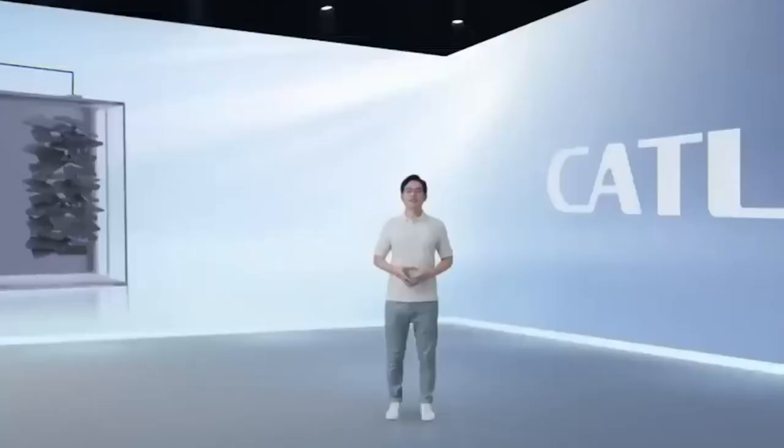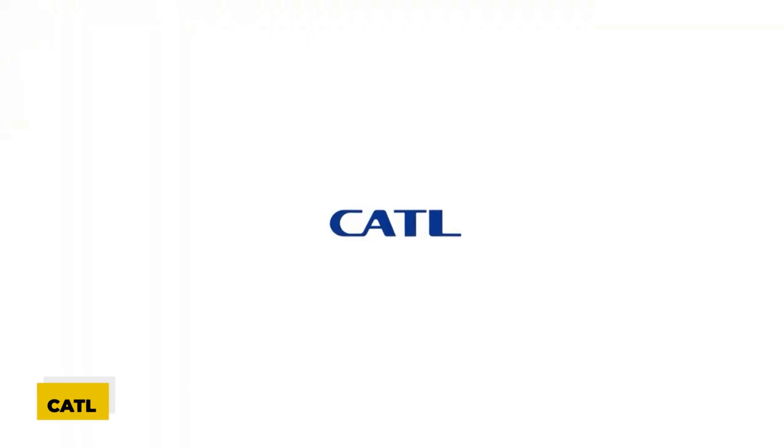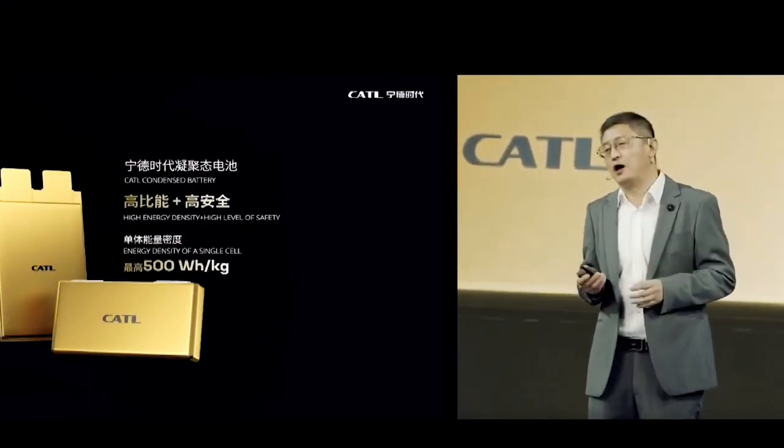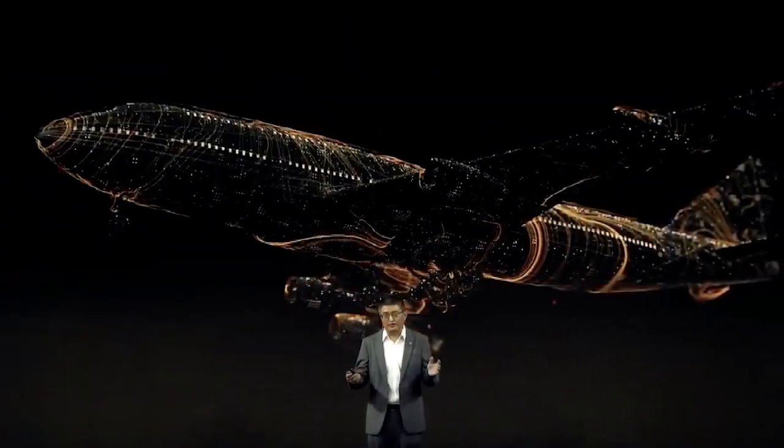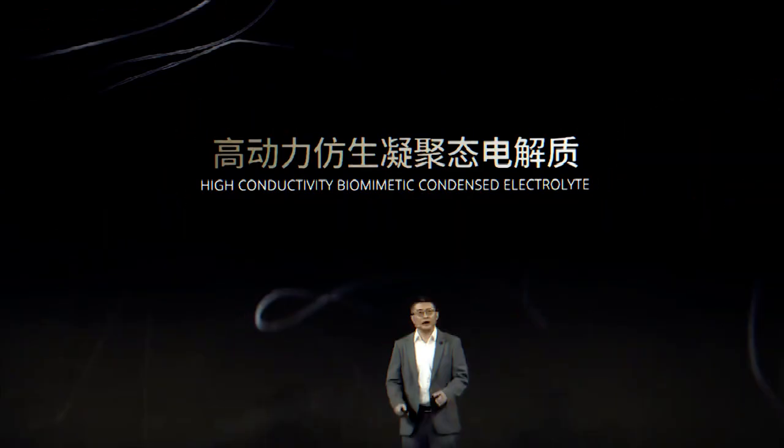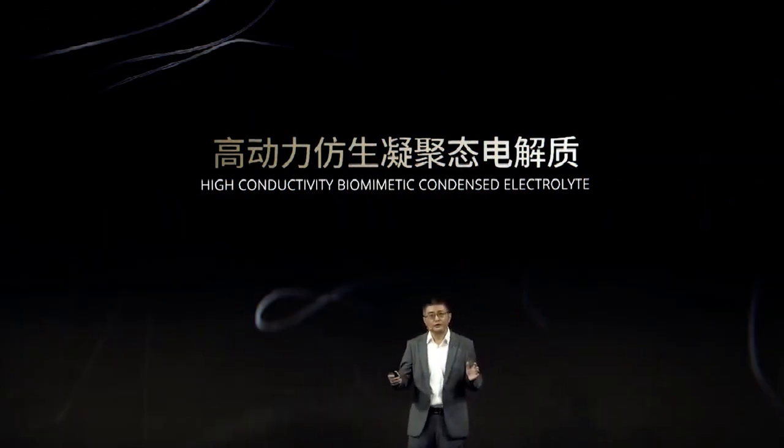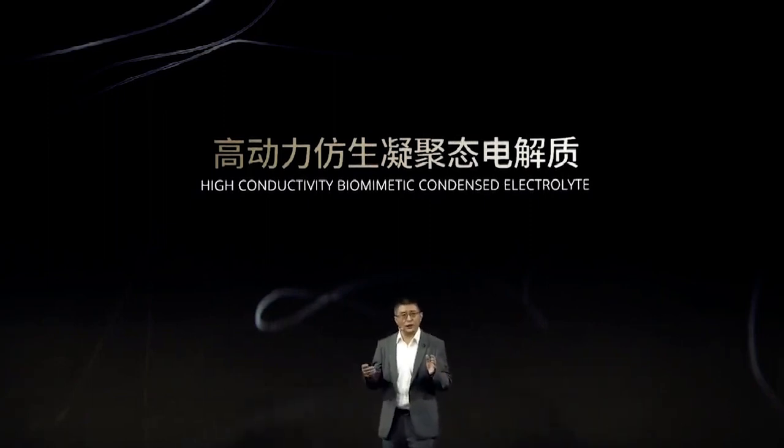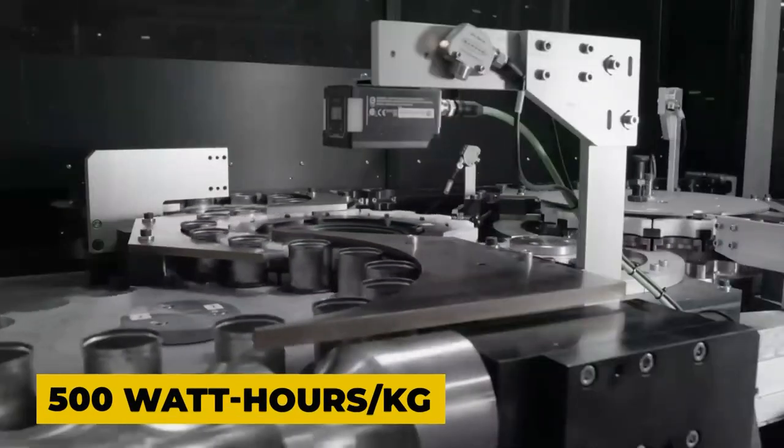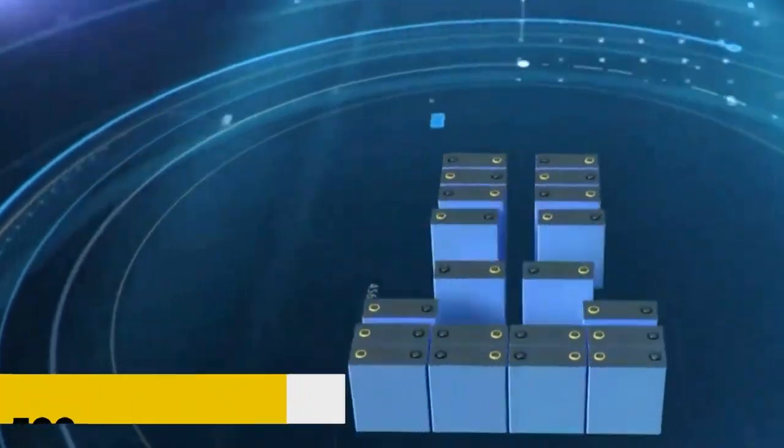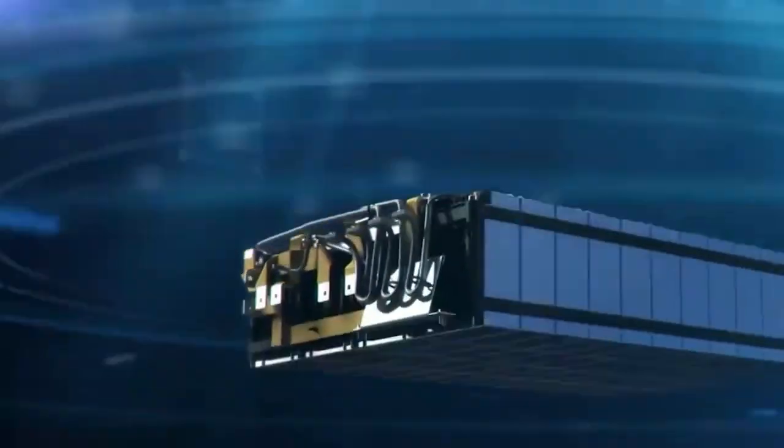Contemporary Amperex Technology Company Limited, CATL, a Chinese company, announced the strongest battery to date and said that electric aircraft may one day be powered by it. During a presentation at the Shanghai Car Show, CATL's chief scientist Wu Kai stated that the battery has an energy density of 500 watt-hours per kilogram, packing more power into a smaller size.